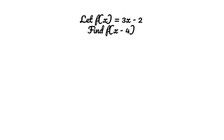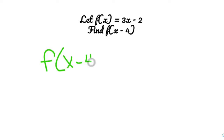All right, if f of x is 3x minus 2, and I have to find out f of x minus 4, I rewrite the original f of x, but instead of writing out x, I write out x minus 4.